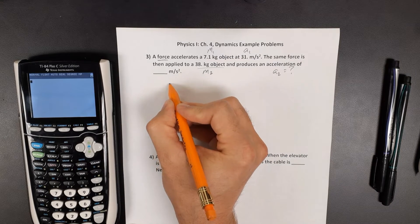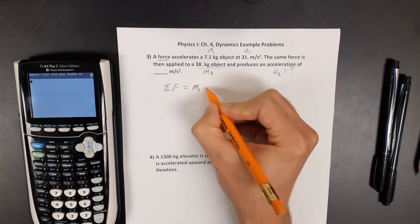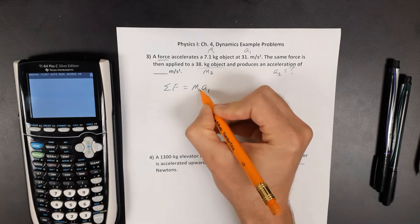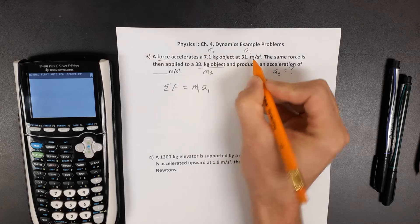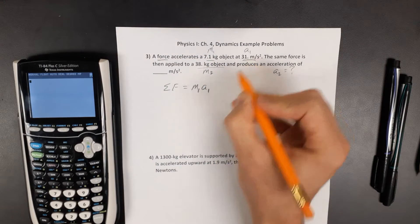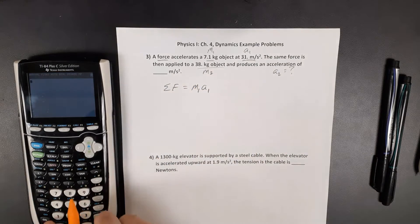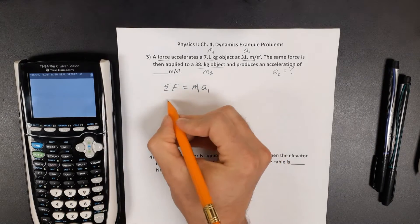So Newton's second law tells me that the net force is an object's mass times its acceleration. Well, let's focus on this first object. I know its mass and its acceleration, so let's use that to figure out how much force was being applied in the first place.